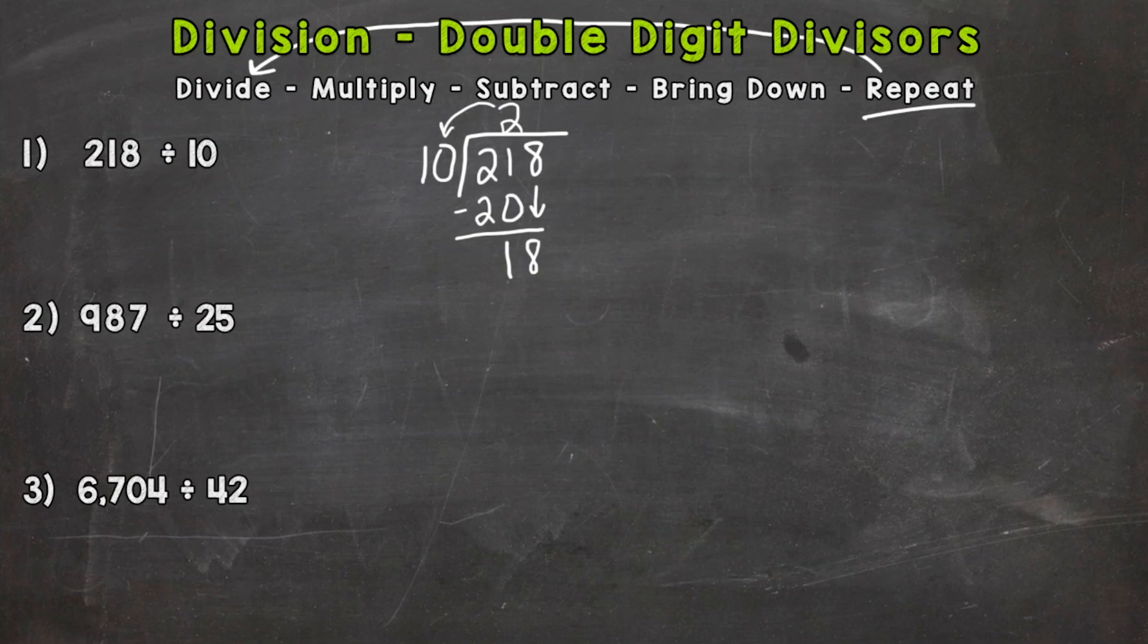So we need to do 18 divided by 10. How many groups of 10 are within 18? And the answer to that is 1. So then we come back around and multiply: 1 times 10 is 10. Subtract: 18 minus 10 is 8.